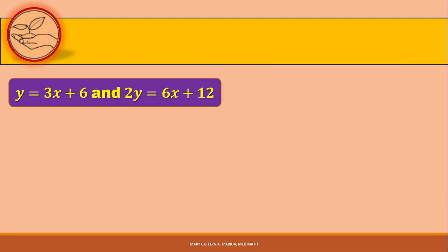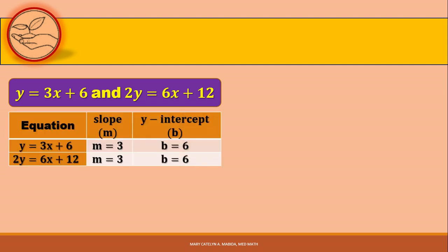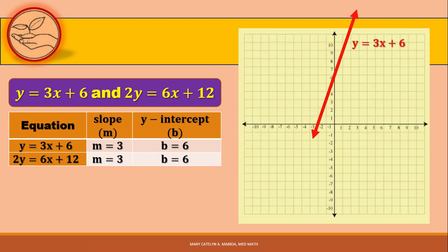For example number 3, y = 3x + 6 and 2y = 6x + 12. Let us first express 2y = 6x + 12 into slope-intercept form. When we simplify the second equation, it is the same as our first equation. Therefore, they have the same slope and y-intercept. Their graphs coincide.